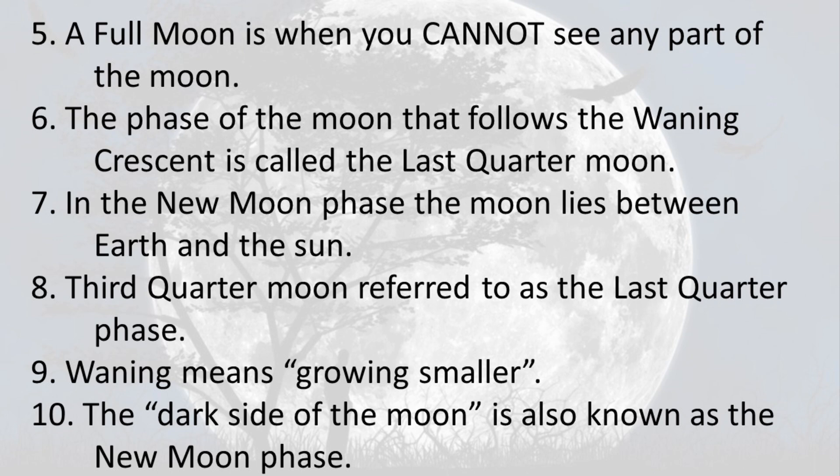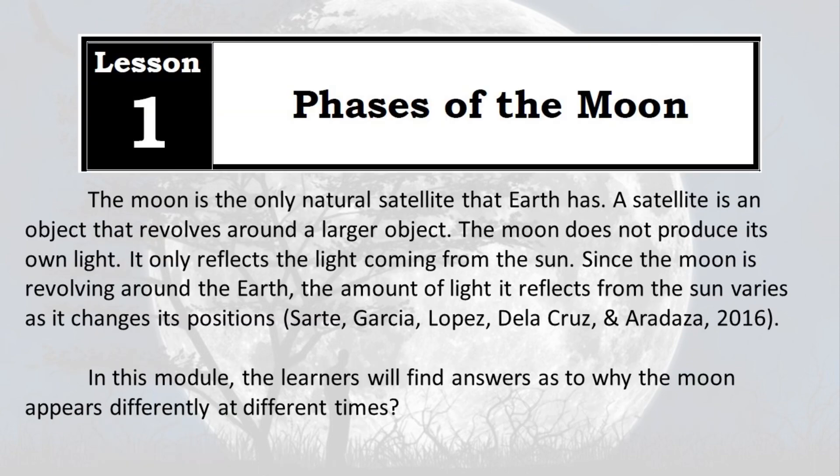8) Third quarter moon is referred to as the last quarter phase. 9) Waning means growing smaller. 10) The dark side of the moon is also known as the new moon phase.